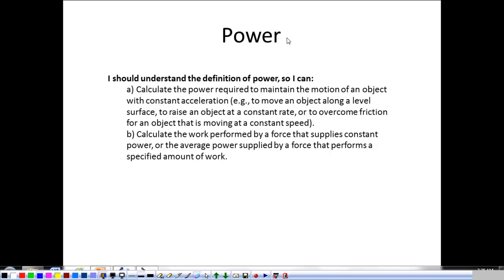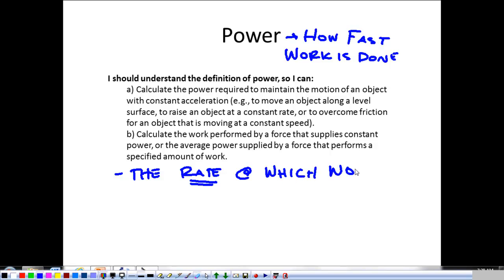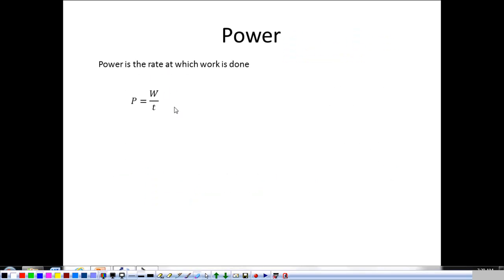Now power is an easy one. Power is just how fast work is done. I guess the fancy way to say that is the rate at which work is done. And that's pretty much it. So power being the rate at which work is done is going to be work divided by time.